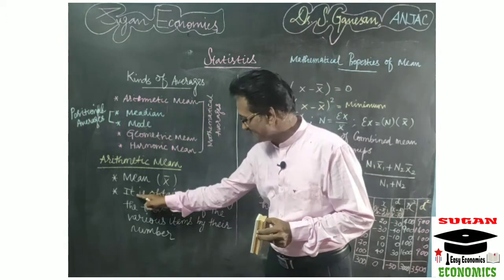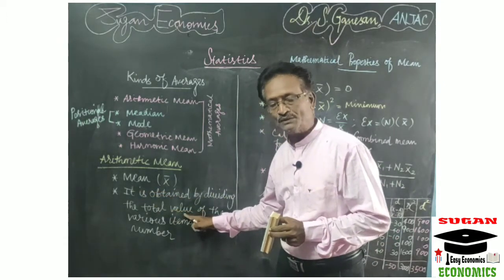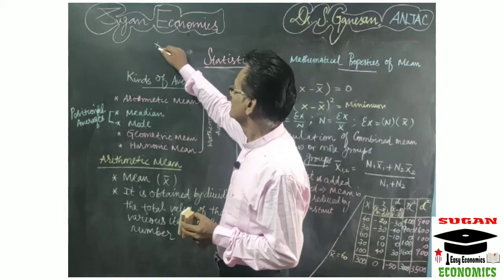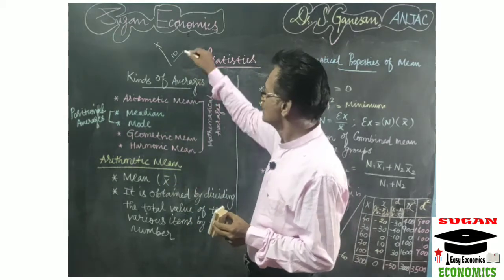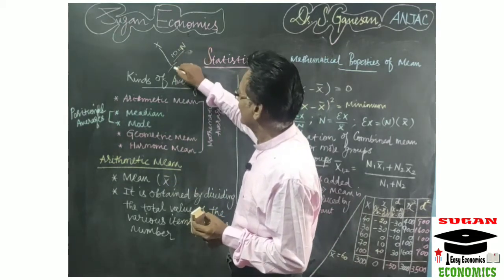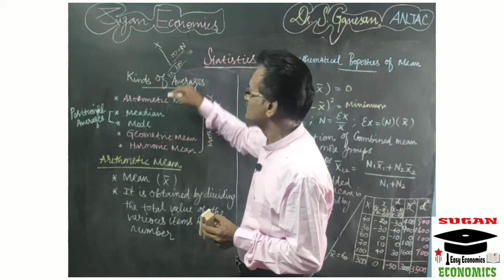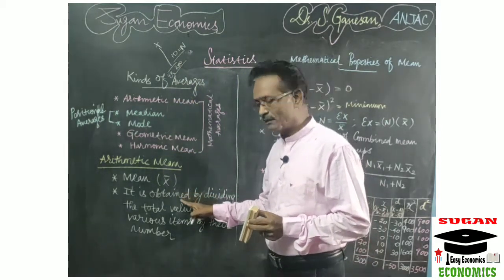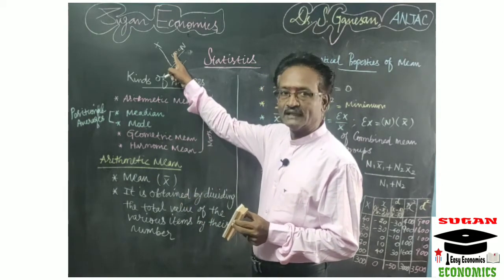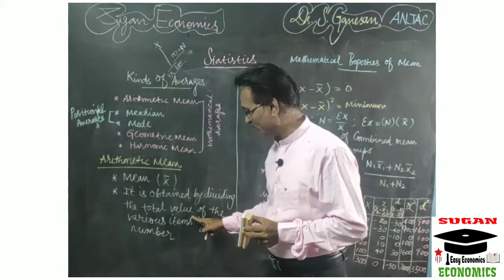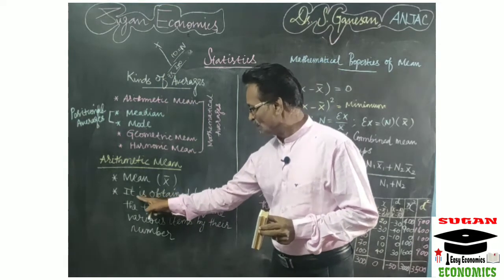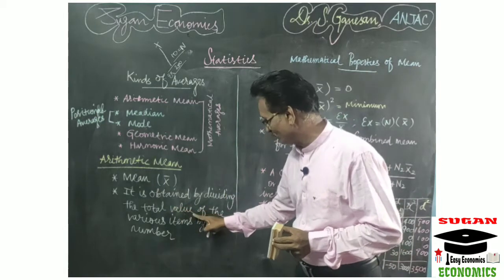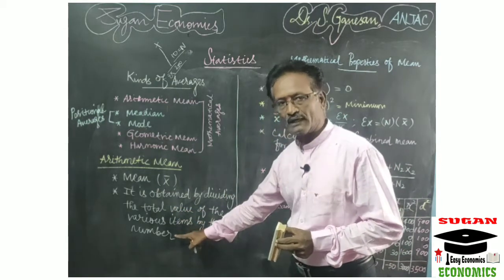For example, suppose in series x there are 10 values, so n equals 10, and the total of those 10 values equals 200. To obtain the arithmetic mean, 200 is divided by 10, which equals 20. So 20 is the arithmetic mean value. Arithmetic mean is obtained by dividing the total value of various items by their number.